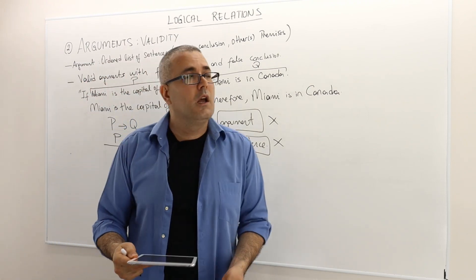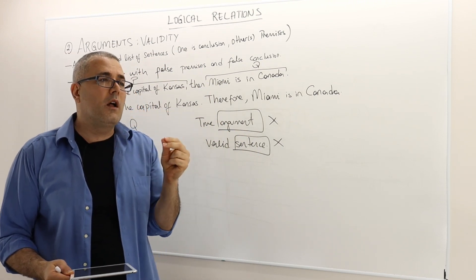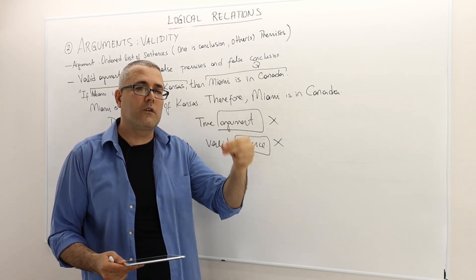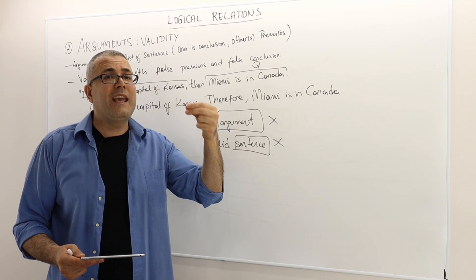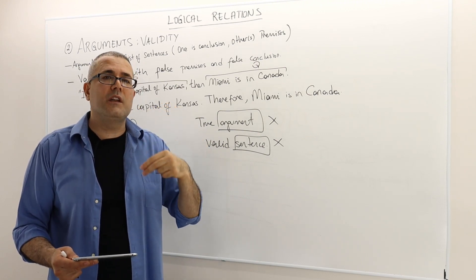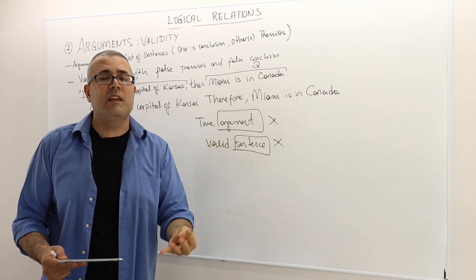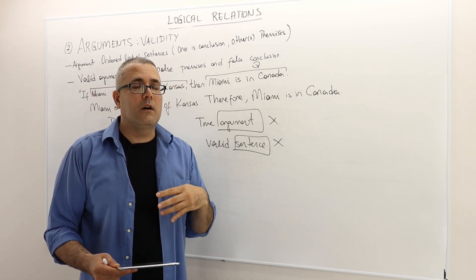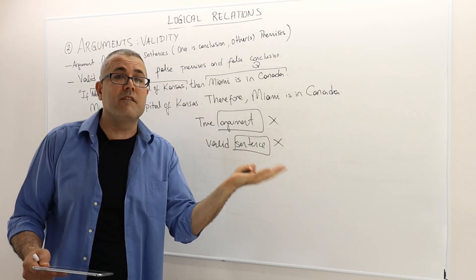Here in propositional logic, if we are worried about whether an atomic sentence is true or false, we basically talk to the experts. If our argument is about history, we go and talk to a historian and ask if those premises are true or false. If the argument is about chemistry, we go to an expert and ask if the premises are true or false. But a person who studies logical language, without any knowledge about the truth of those premises, can say something about the validity of the argument. A person who studies logic can say, without knowing anything about the premises, 'your argument is invalid' or 'perfectly valid.'